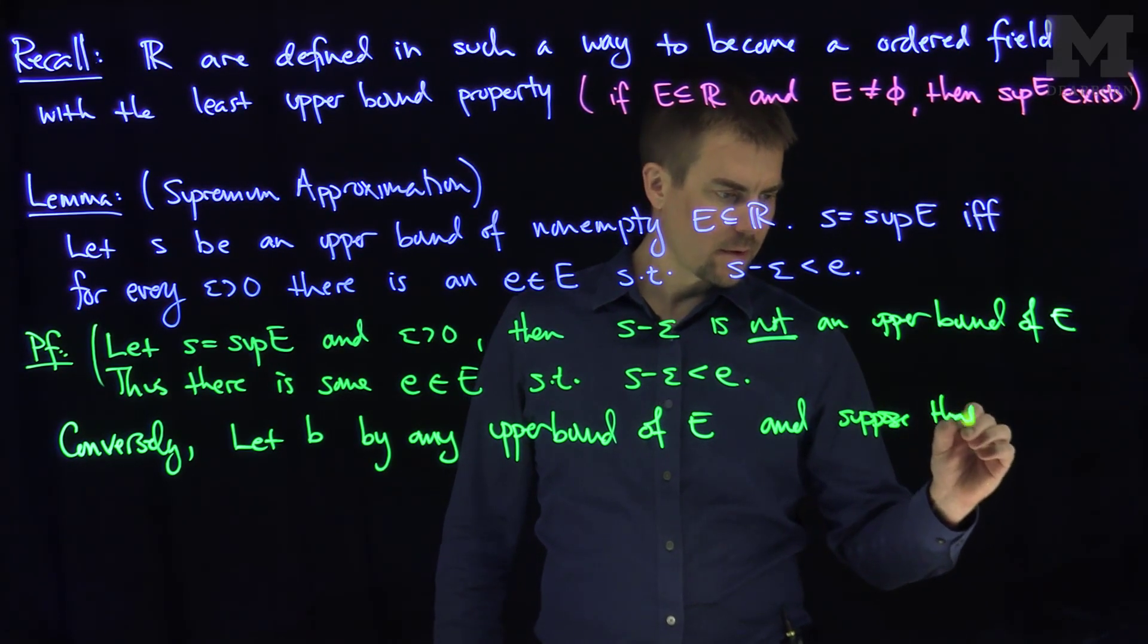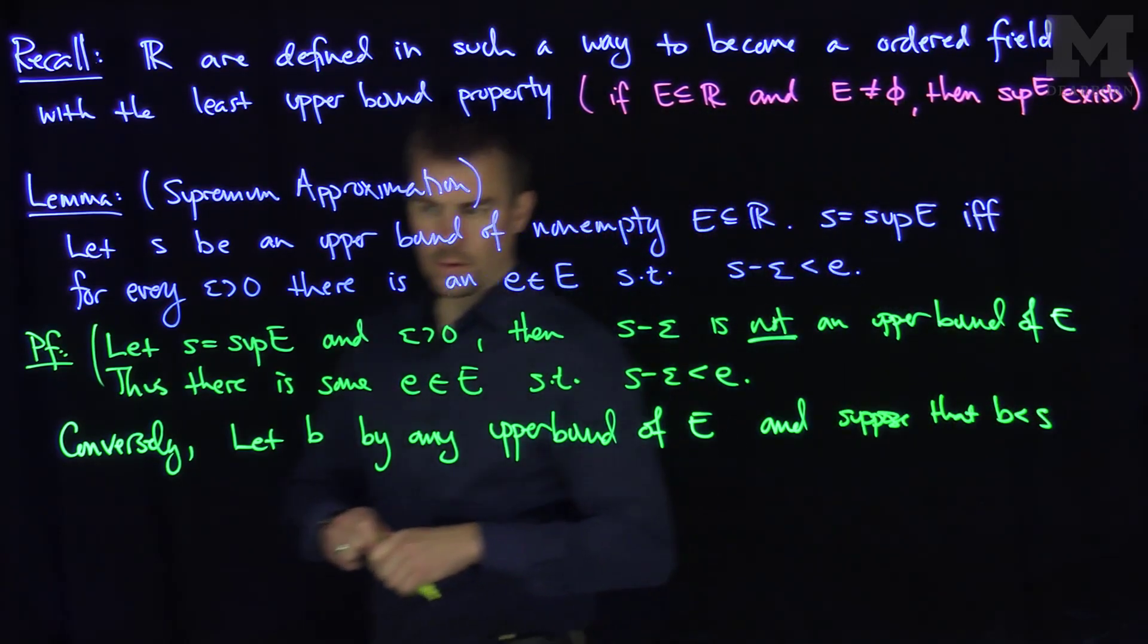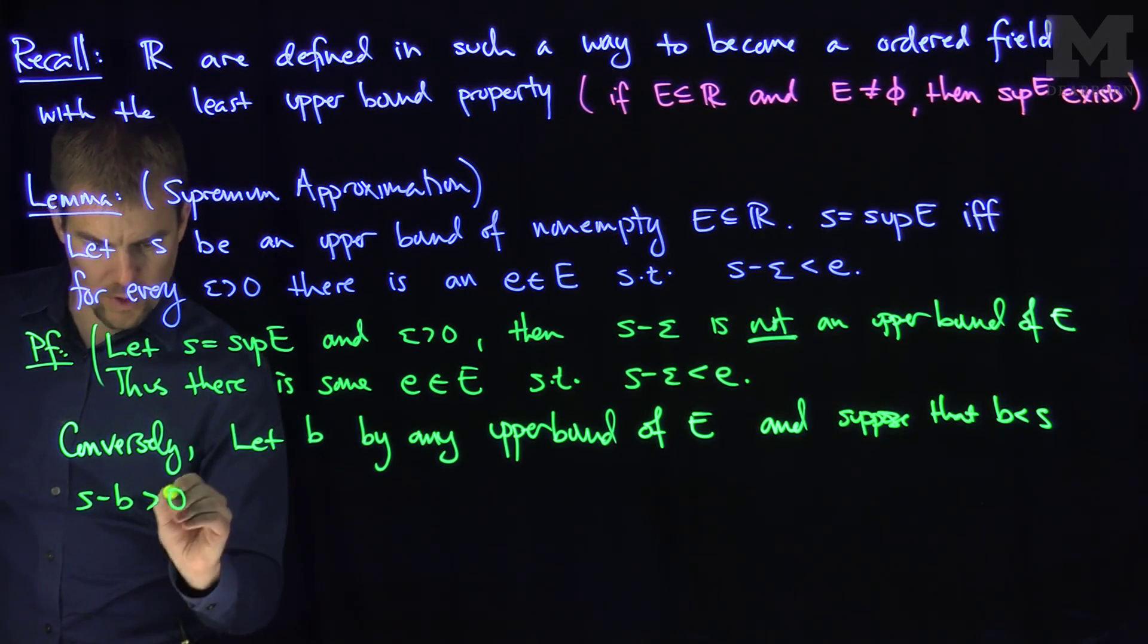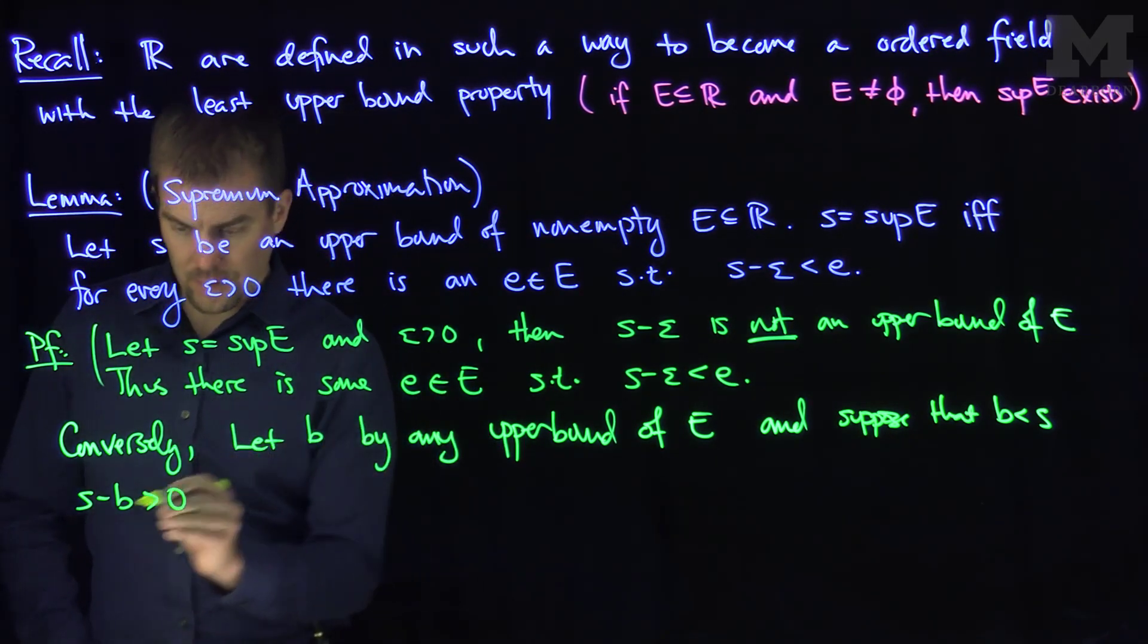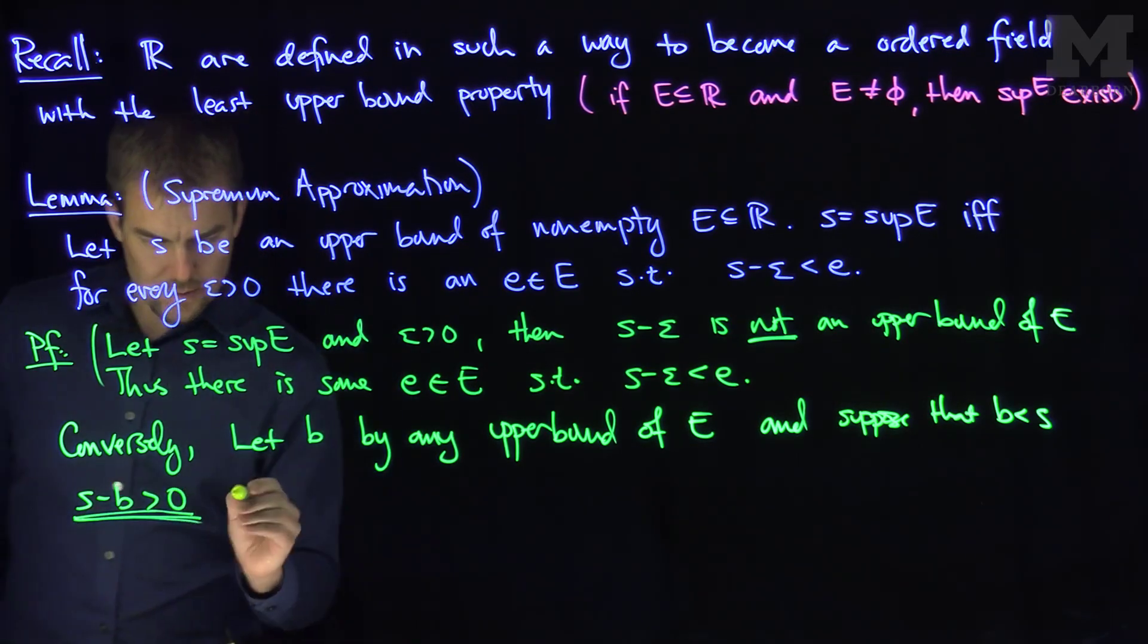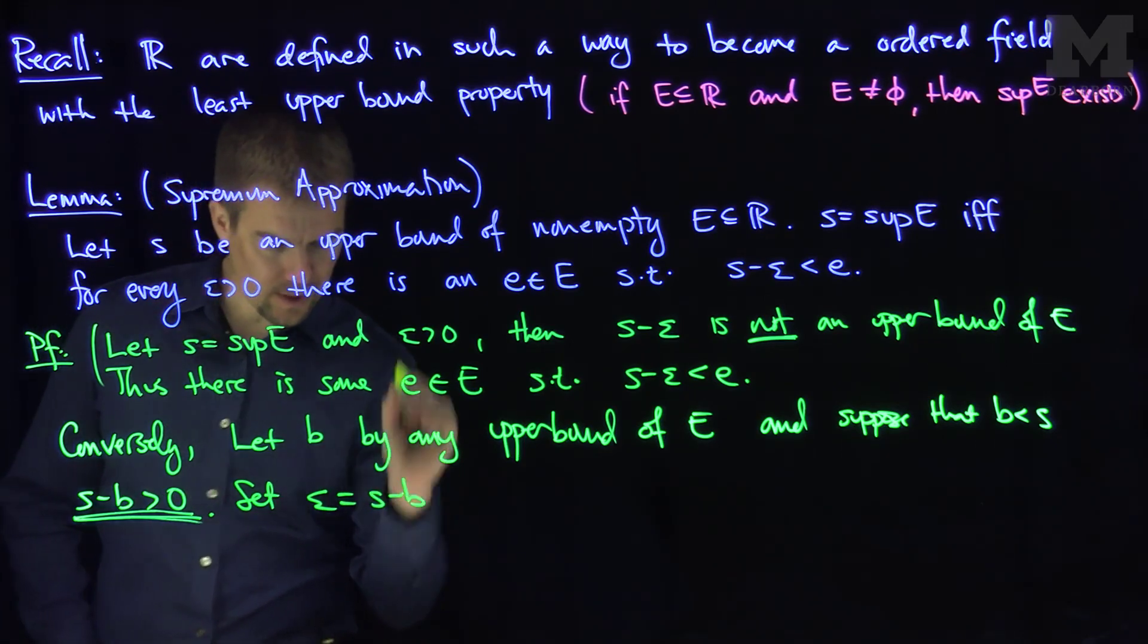Suppose that B is less than S. That says that S minus B is positive, S minus B is greater than zero. Therefore, this is my candidate for epsilon, so set epsilon to be S minus B.